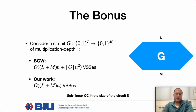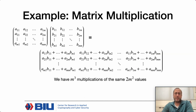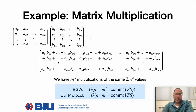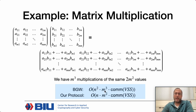As an example, consider matrix multiplication. This is a circuit where the number of inputs and outputs is relatively small—something like M-squared—while the number of multiplications, at least in a naive implementation, is M-cubed. BGW requires n-squared times M-cubed VSSs, whereas our protocol improves n-squared to n for any circuit, and for this particular circuit we can also reduce M-cubed to M-squared.